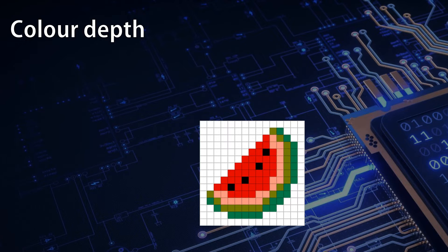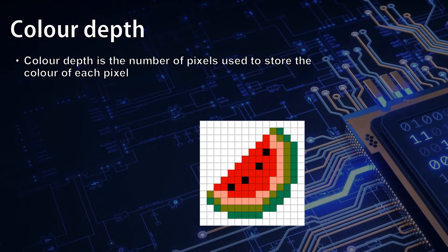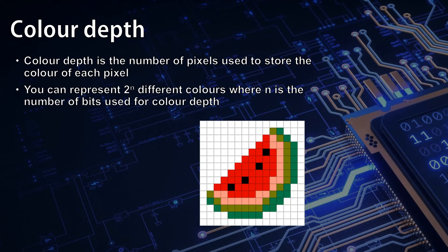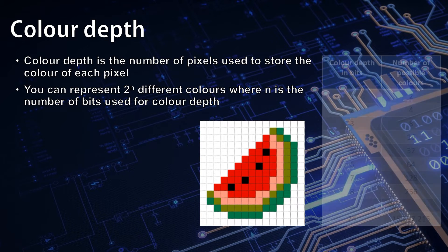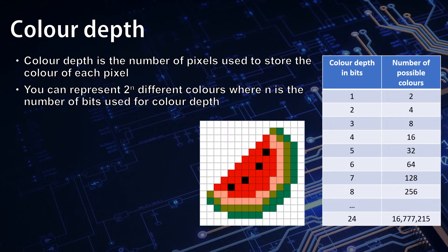The number of bits we use to record what colour a pixel is is known as colour depth. You can represent 2 to the n different colours, where n is the number of bits used for the colour depth.